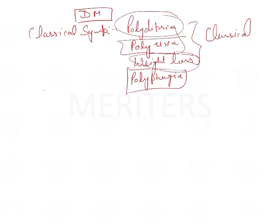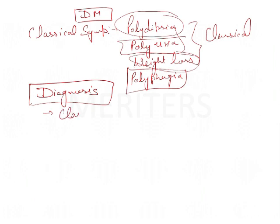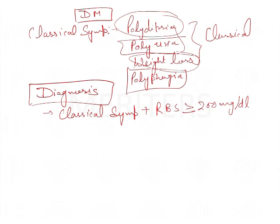That is why polyphagia is not always considered a classical symptom. Coming to the diagnosis of diabetes mellitus: the first method is if classical symptoms are present — polydipsia, polyuria, weight loss — and random blood sugar is more than or equal to 200 mg per deciliter, then the patient can be called diabetic.